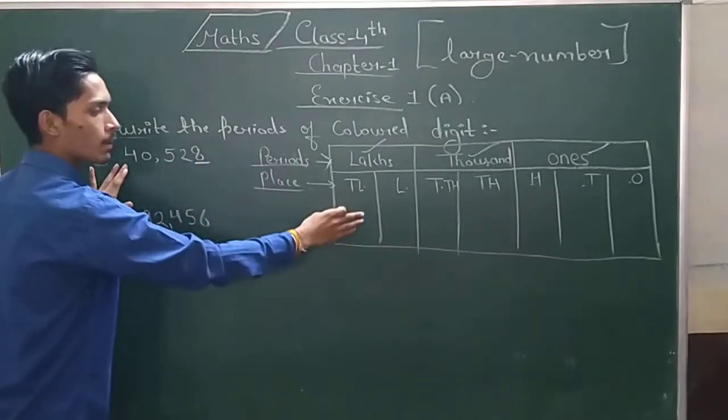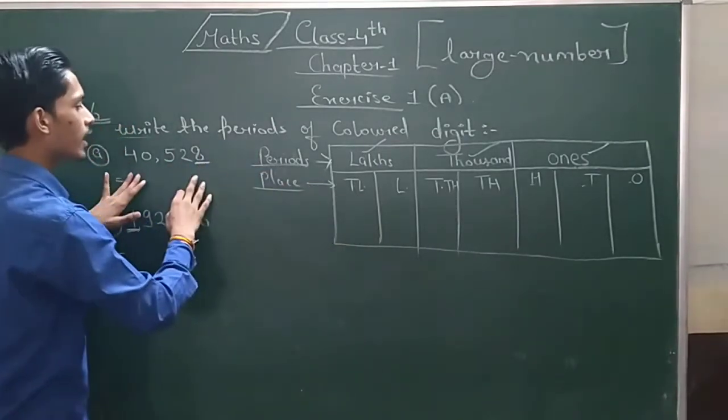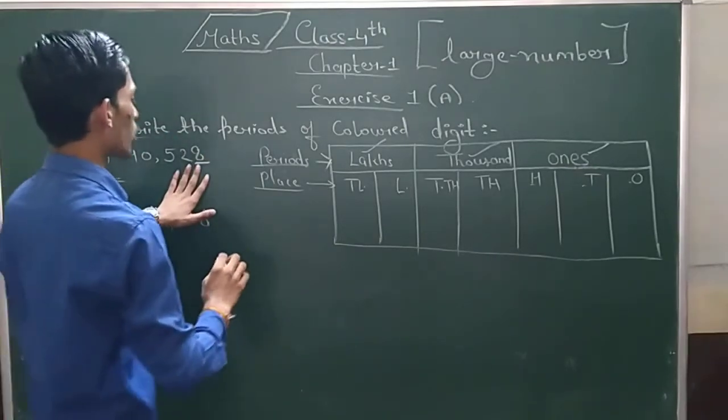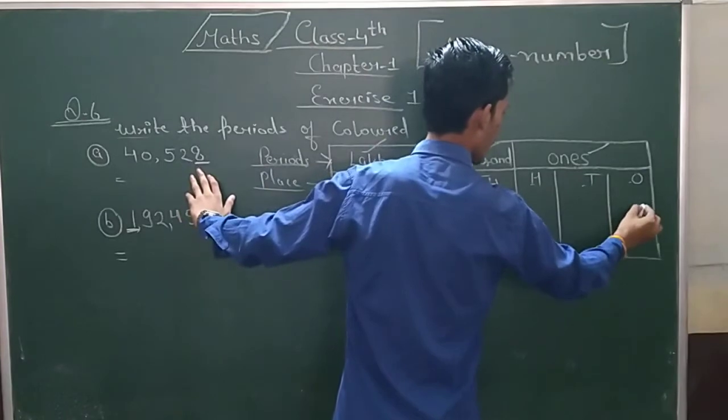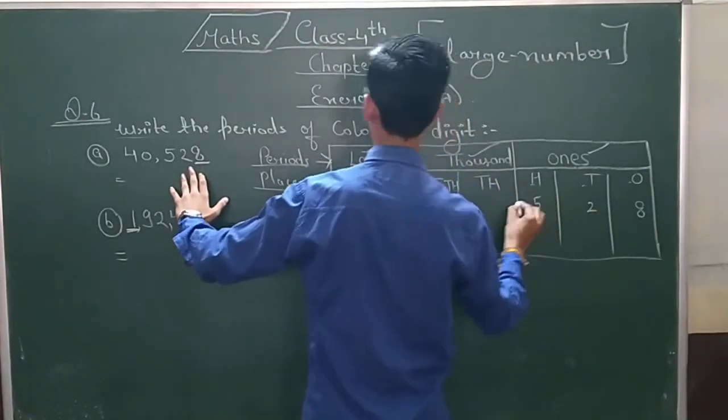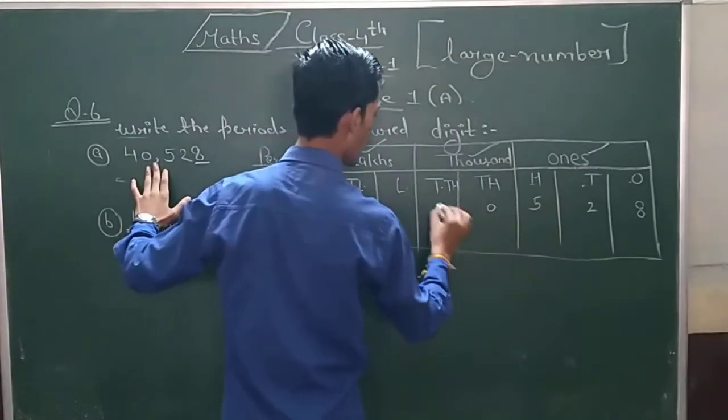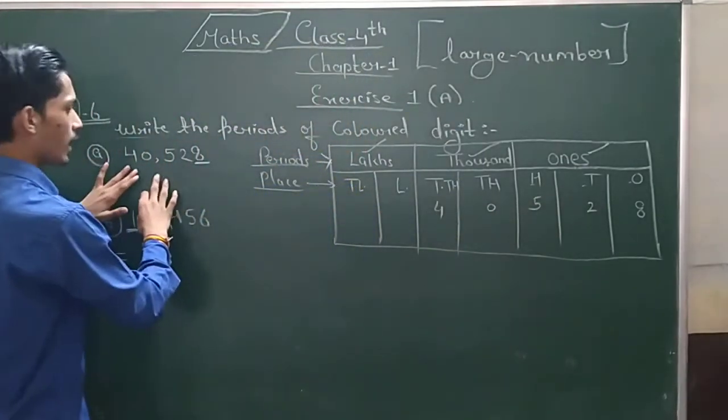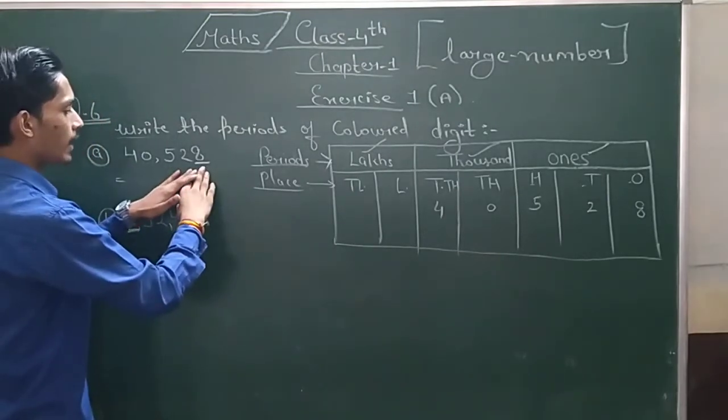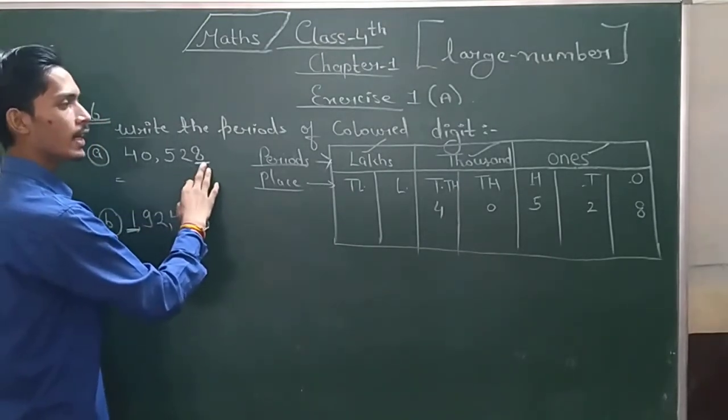We can see which period we have put in. What is 8? 2, 5, 0 and 4. This is the number we have put in the table. This table we have put in the color of 8.